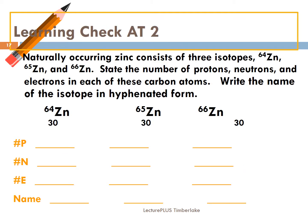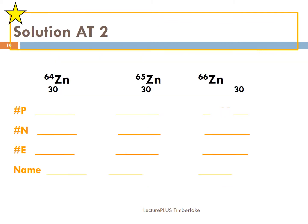Try number three: zinc-64, zinc-65, and zinc-66. Notice they all have 30 protons because it's zinc. So you get 30, 34, 30 for zinc-64; 30, 35, 30 for zinc-65; and 30, 36, 30 for zinc-66.